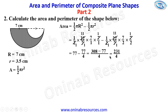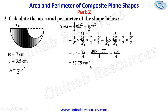4 goes into 231: 4 into 23 is 5 remainder 3, and 31 is 7 remainder 3. That gives us 57 and 3 over 4, and 3 over 4 as a decimal is 0.75. So 231 divided by 4 gives 57.75 square centimeters, representing the area of this shape.